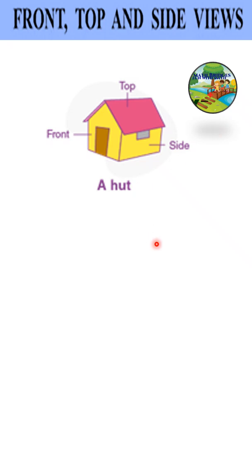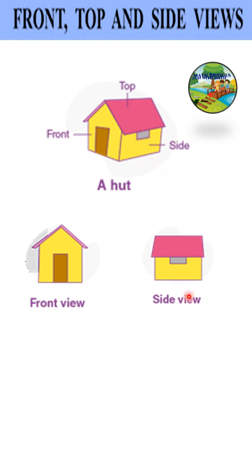For this given house, let's see the views. This is the front view of the given house. You can see here it's been mentioned. And the side view is this one. For the top view, we'll be getting only the pink side of the top. This is the top view.